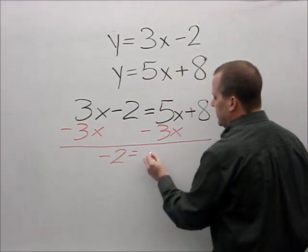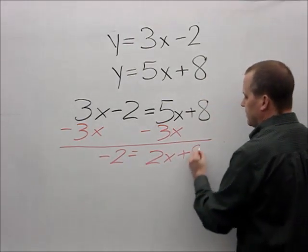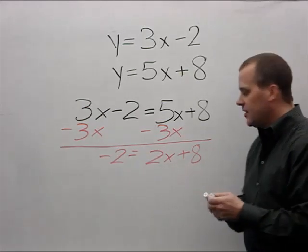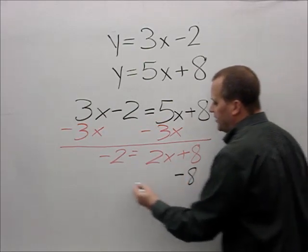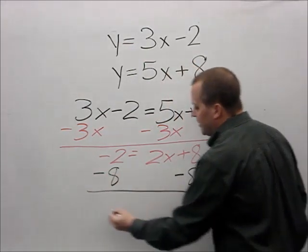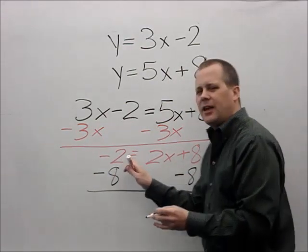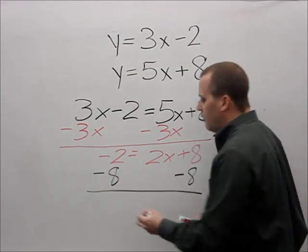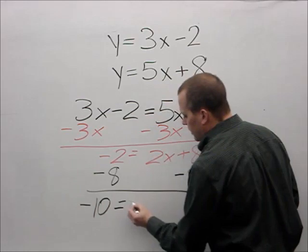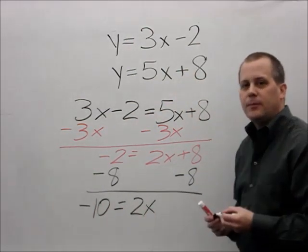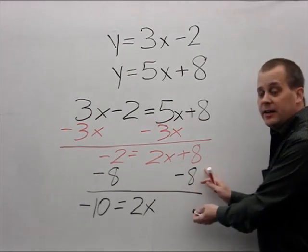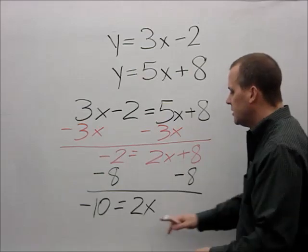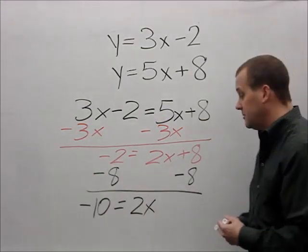I end up with negative 2 equals 2x plus 8. I want to get rid of that positive 8, so I subtract 8 from both sides. I like to think of this like money: I lost 2 dollars, then I lost 8 more dollars, so I've lost a total of 10 dollars. The 8s cancel out — positive 8 minus 8 is zero — so I have negative 10 equals 2x.